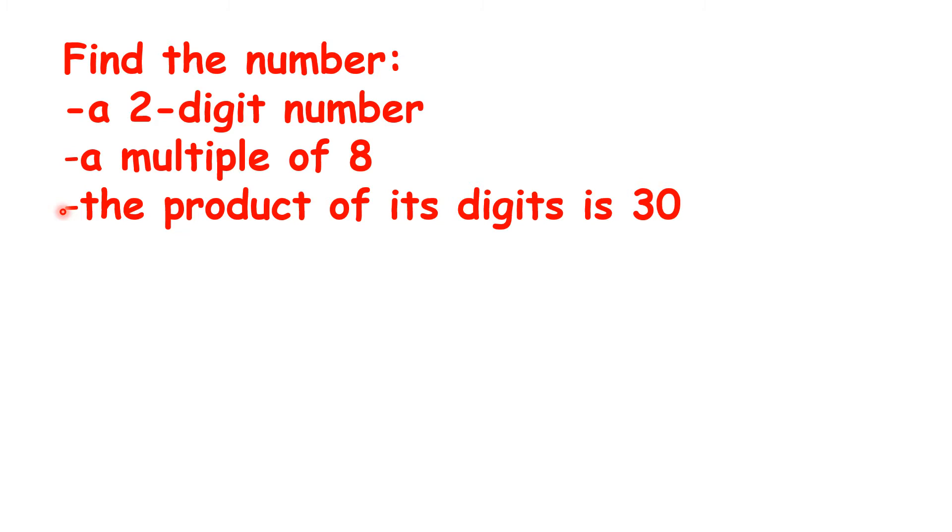Now rather than going through every two-digit number, let's go through two-digit numbers which are also in the eight times table, until we find one where the digits multiply to make 30. 16 is a two-digit number in the eight times table, but one times six isn't 30.